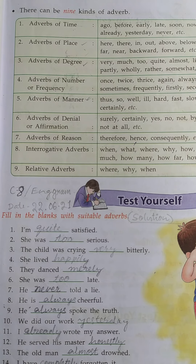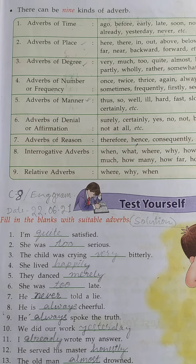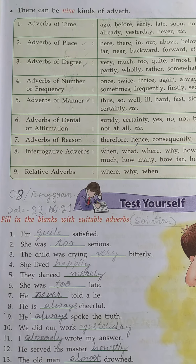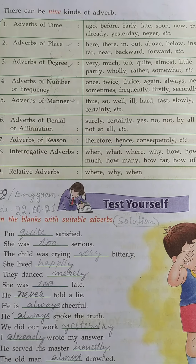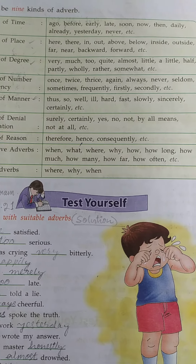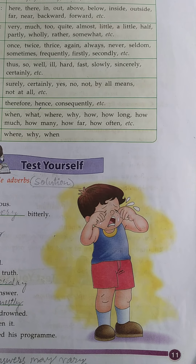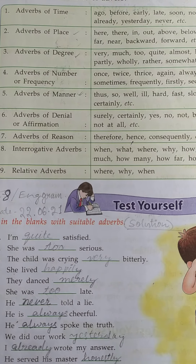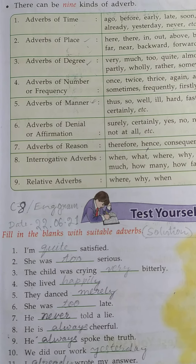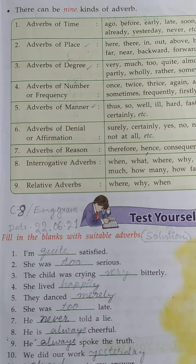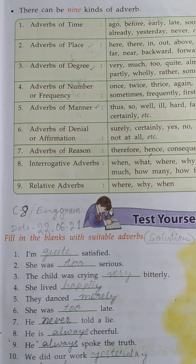In English grammar, there are nine kinds of adverb. So students, let's open page number 11 in your English grammar book and let's read. There can be nine kinds of adverb.